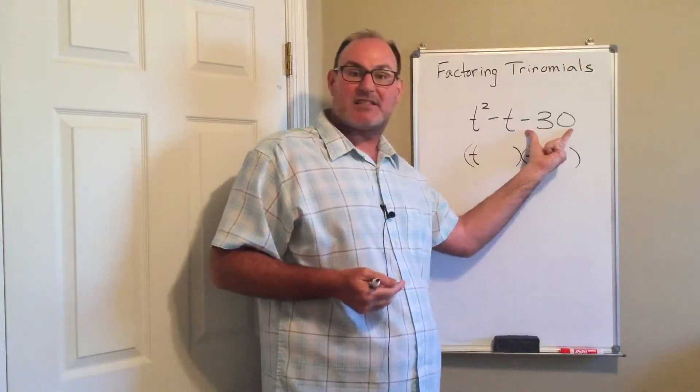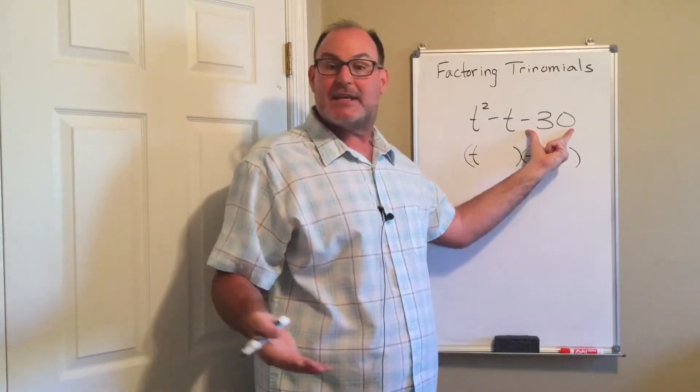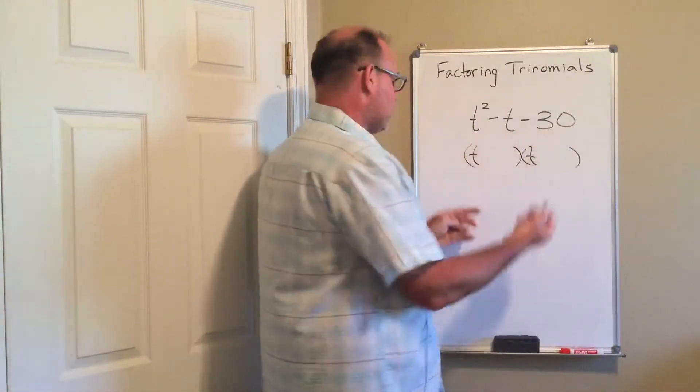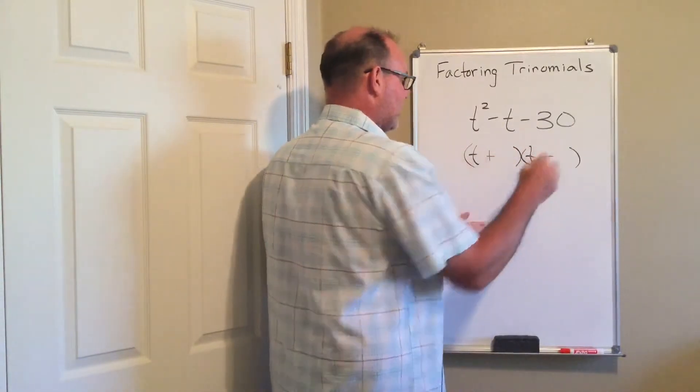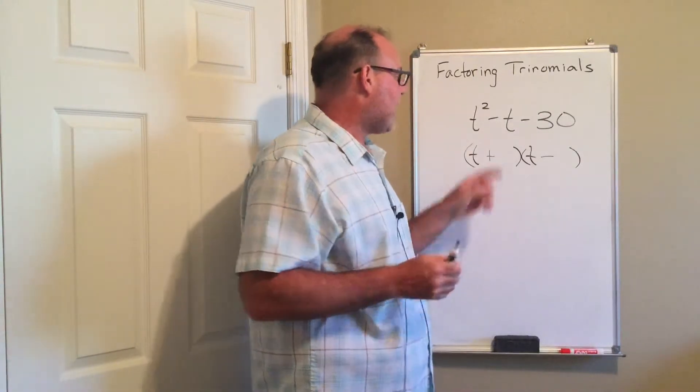This time, my lasts multiply to give me a negative 30. The only way to get a negative number when you multiply is to multiply a positive and a negative, or a negative and a positive. The order that you write those down does not matter.